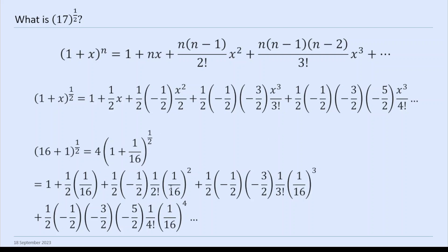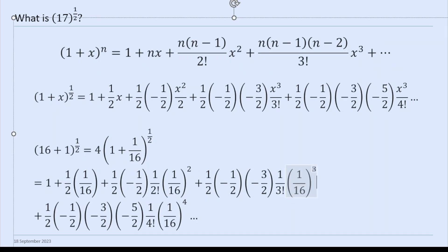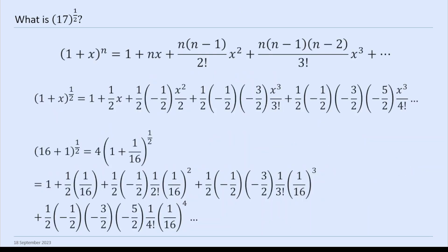And then we use this series here with x equal to 1 over 16. So you get this: 1 plus 1 half times 1 over 16, which is x, plus 1 half minus 1 half, 1 over 2 factorial, 1 over 16 squared, plus 1 half minus 1 half minus 3 over 2, 1 over 3 factorial, 16 cubed. It's quite easy, although there's a lot of it.